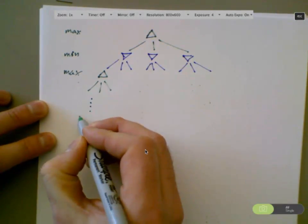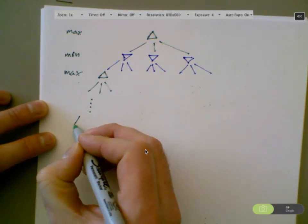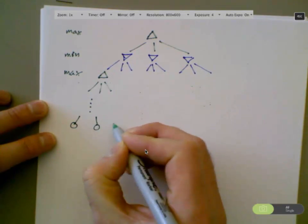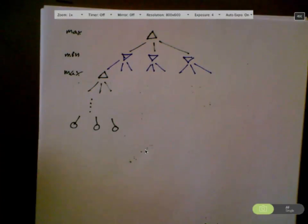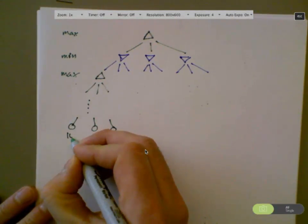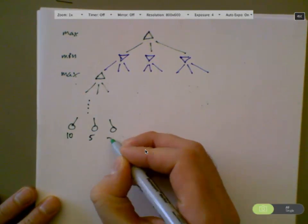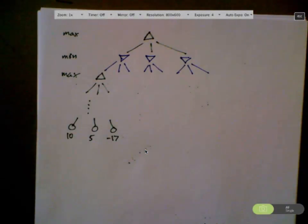And then somewhere down at the bottom of the tree will have terminal states where the game is over. And there'll be some cost or outcome like, you know, 10 or 5 or negative 17. So the full minimax tree, you start at the current state of the game and you unfold all the way down until the game is over.